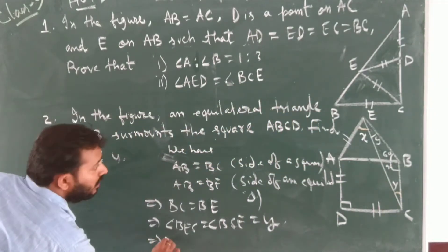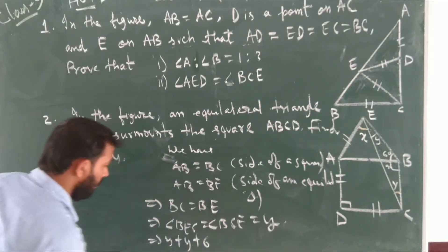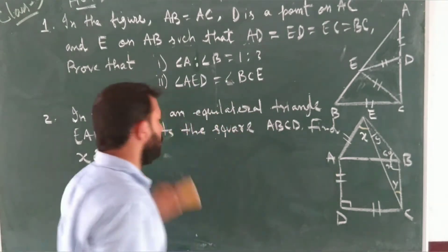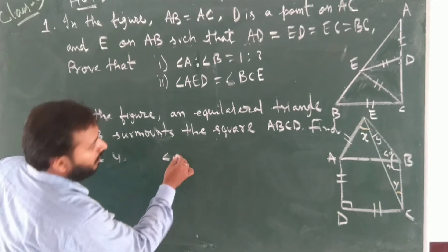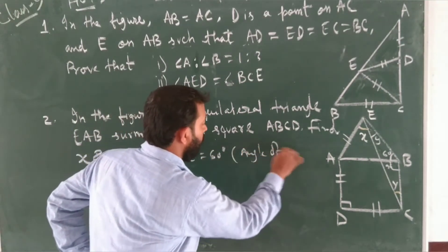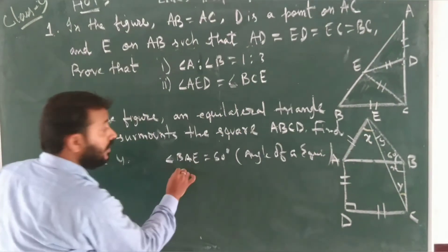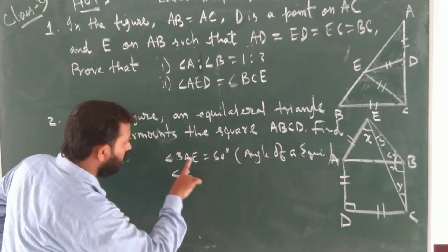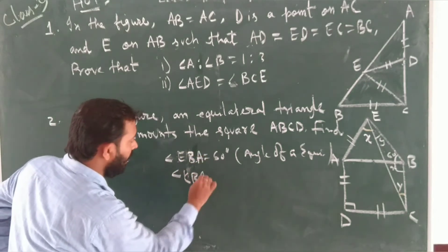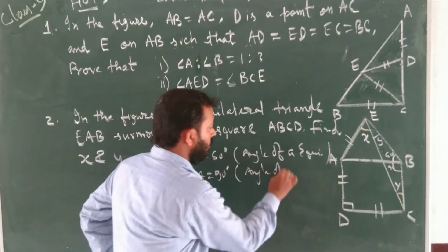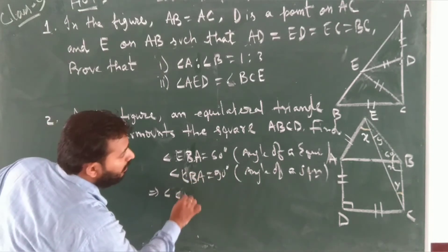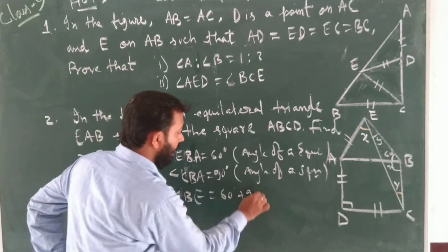In triangle BCE, angle CBE equals angle CBA plus angle ABE, which is 90 degrees plus 60 degrees, giving us angle CBE equals 150 degrees.